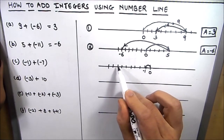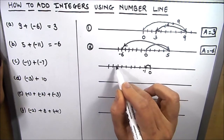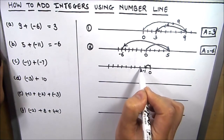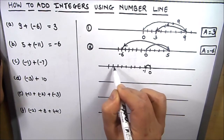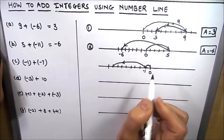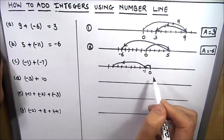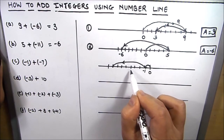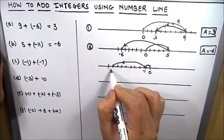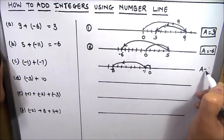Now we have to add negative 7, so we move in the same direction 7 steps: 1, 2, 3, 4, 5, 6, 7 — we stop here. This is our resultant point. We count the divisions from 0: negative 1, 2, 3, 4, 5, 6, 7, 8. So the answer is negative 8.